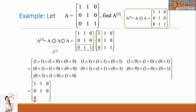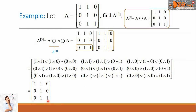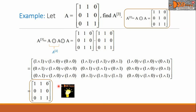The next element is 1. Continuing: multiplying the third row by the second column gives 1, and multiplying the third row by the third column gives 1. The remaining elements are all 1. This gives us the A power 3 matrix as the final answer.